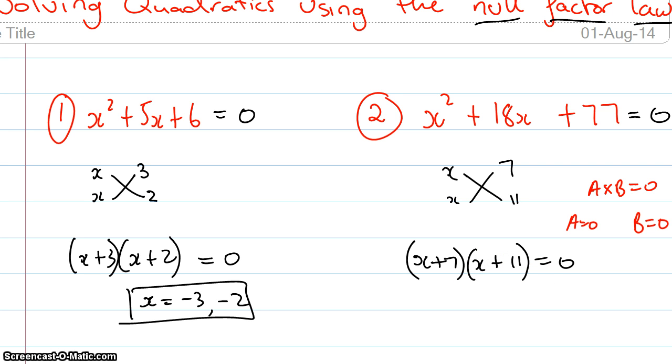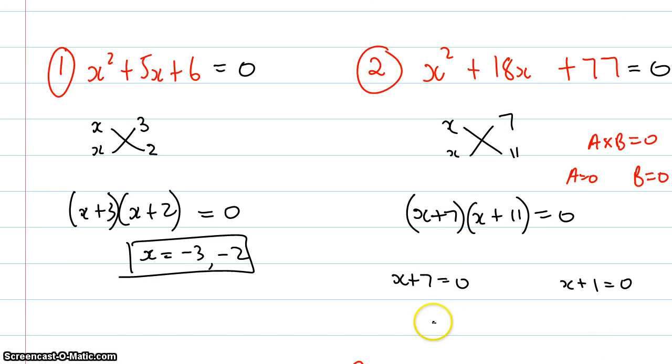So I've got that is my a, that is my b, so I've got x plus 7 equals 0 and I've got x plus 1 equals 0. And then I can just solve these equations to make them x equals negative 7 and x equals negative 1.